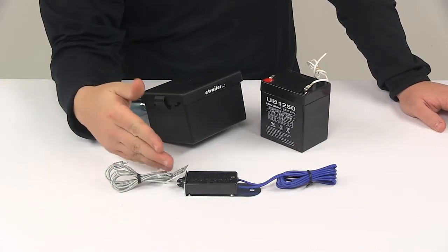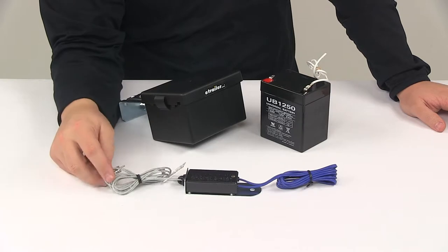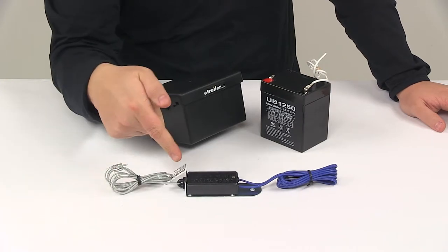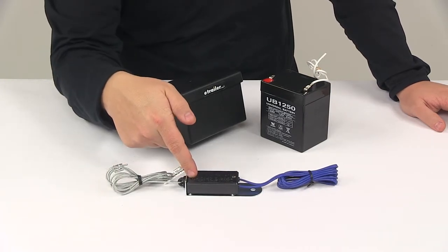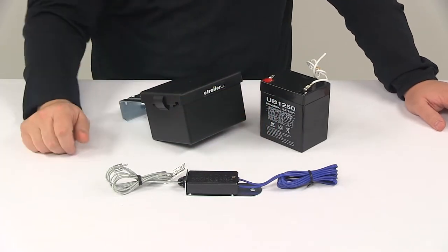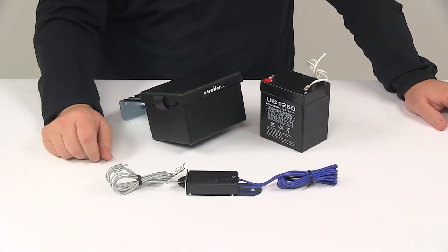Again, if the event happens where the trailer disconnects from the vehicle, this cable would get pulled. The pin would get pulled out of the switch. It would send a signal through, and then it would activate the trailer's brakes, bringing your trailer to a stop.